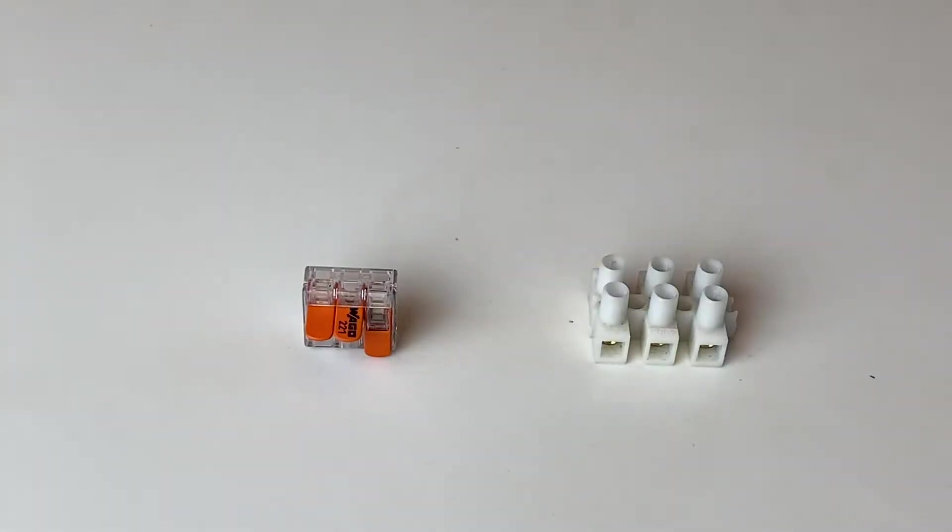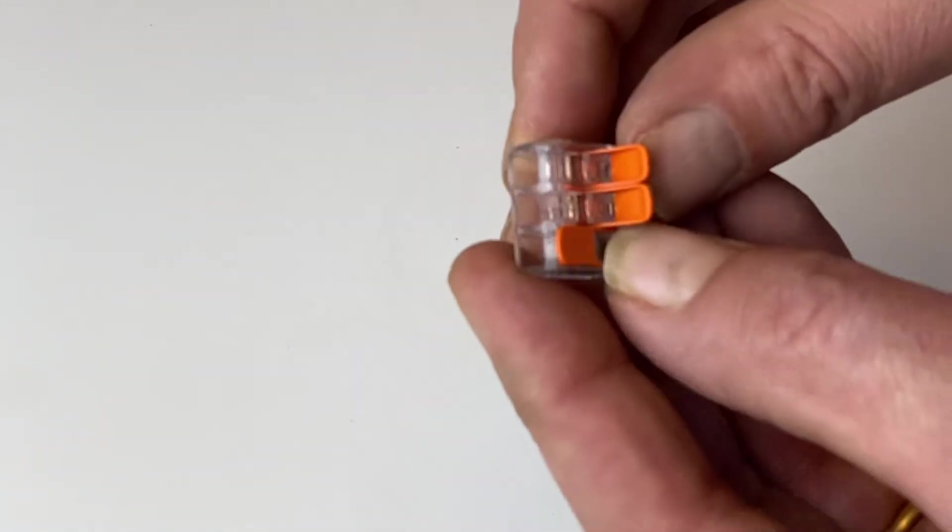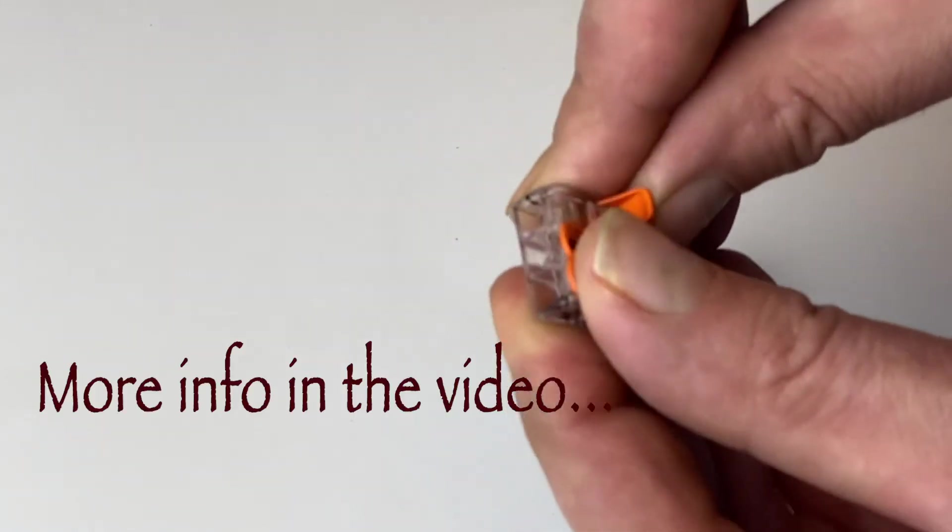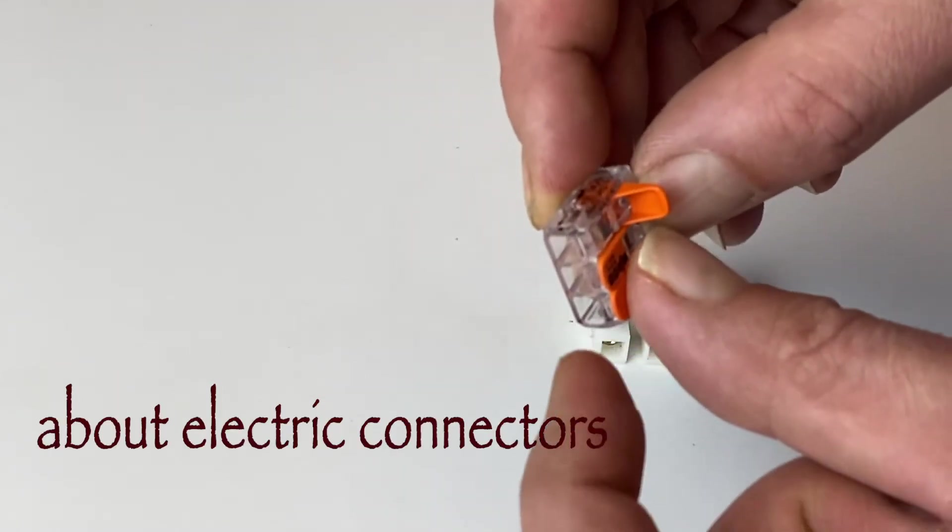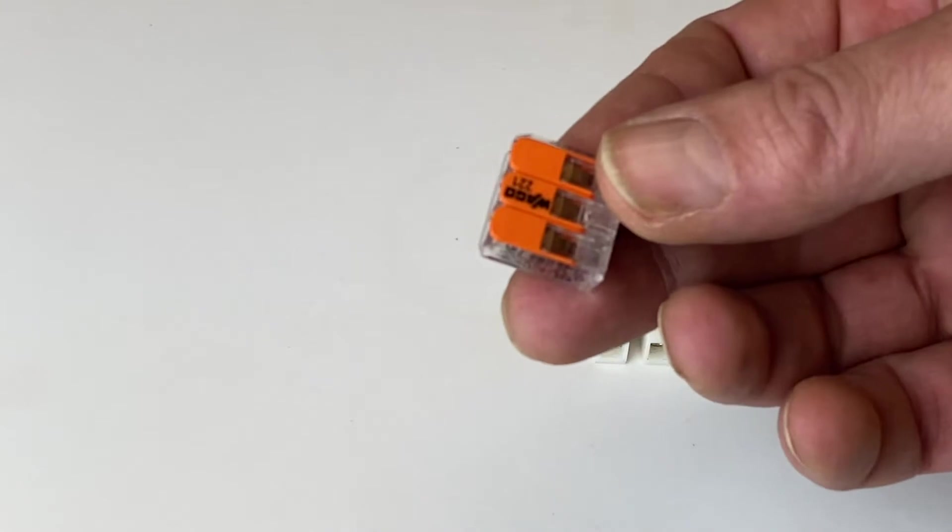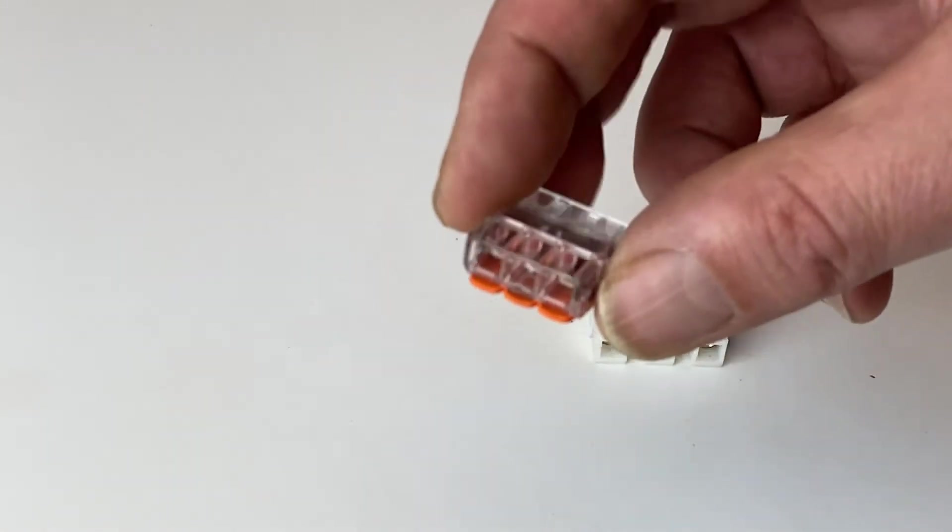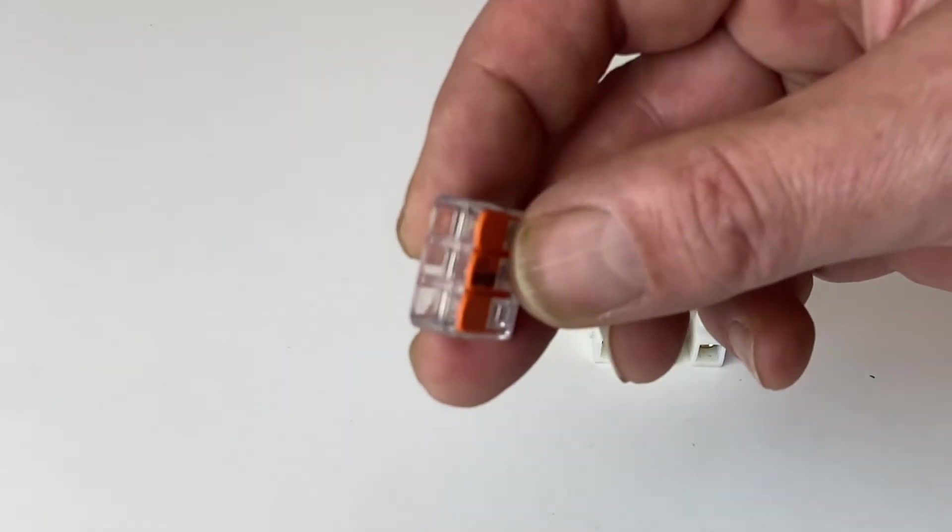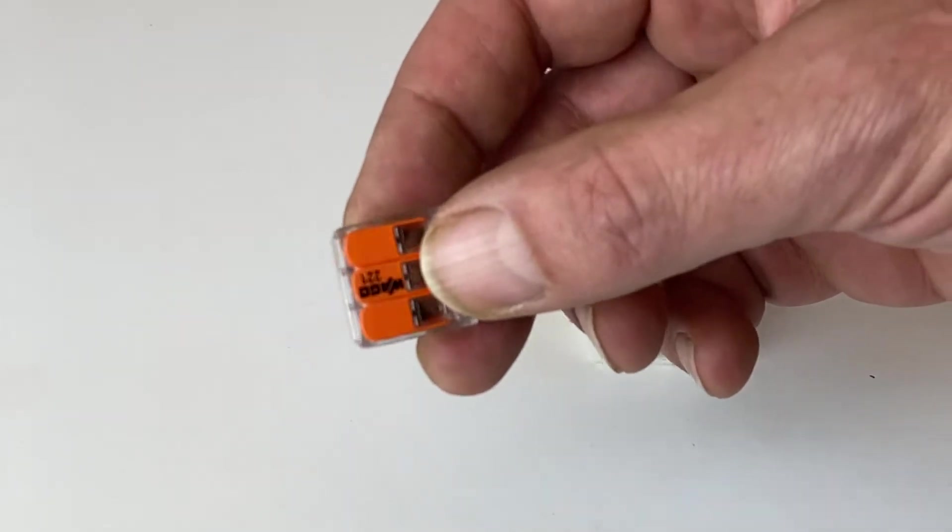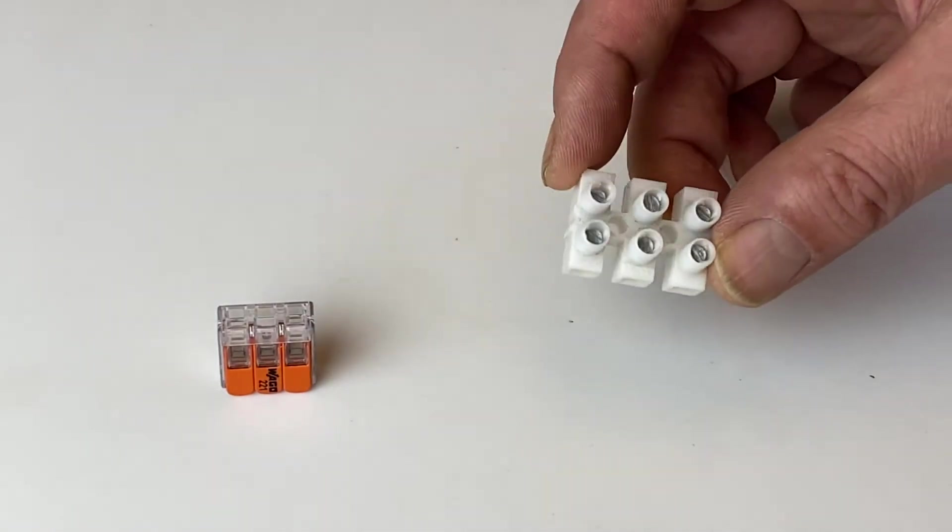For connecting lighting, I warmly recommend this type of connector. This is a clipsable Wago. You insert the wire here and then you clip it down. And this will be very interesting because we have different sections of wires, and this is much easier to manage with this type of connector. Otherwise, you can also use the dominoes.